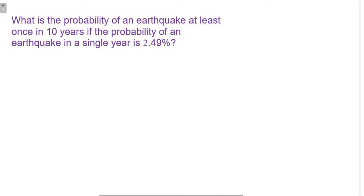All right, so what they're really saying when they have this awkward wording here, when they say the probability of an earthquake at least once in 10 years, they're talking about the probability of at least one earthquake in 10 years. And they've given us the probability of an earthquake happening for any given year. When they say in a single year, that's any given year.